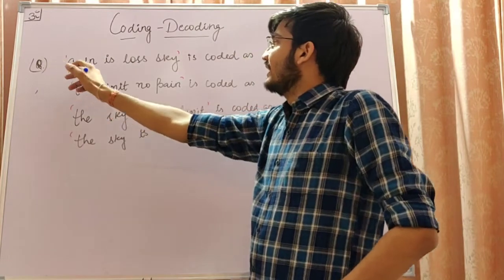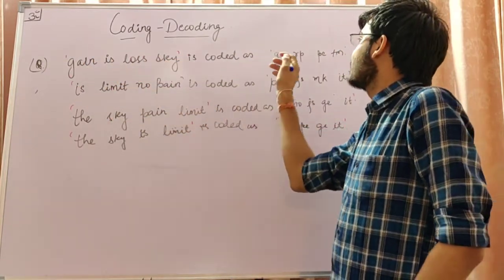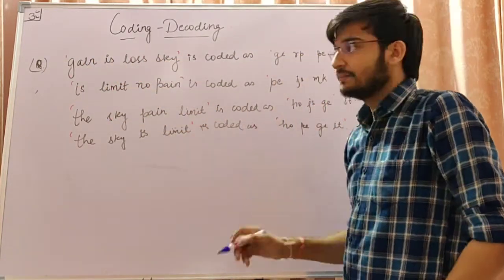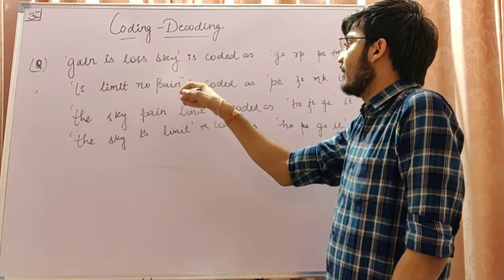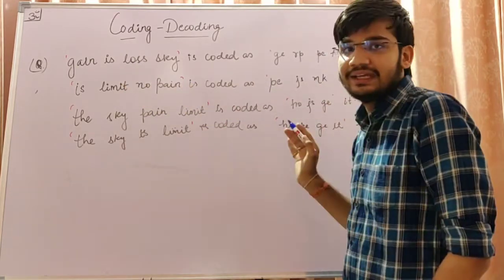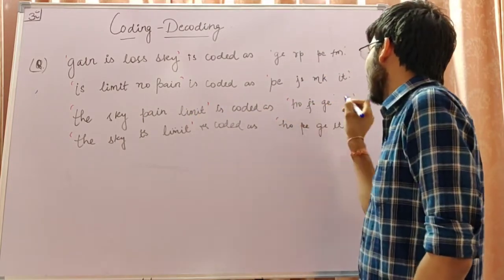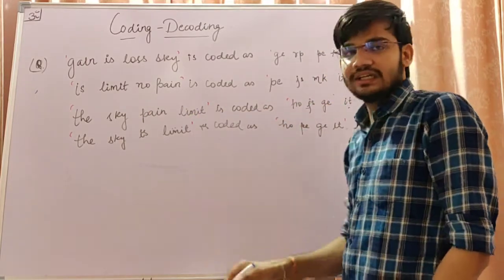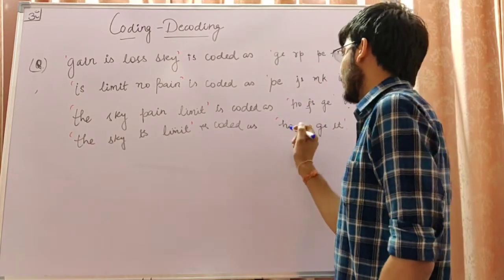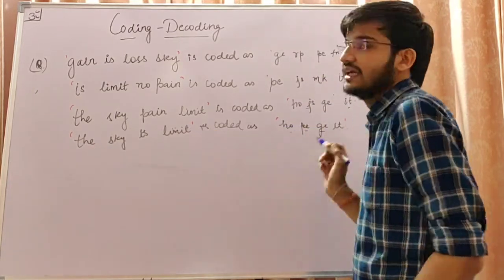The gain is lost sky is coded as GERP PETM. Is limit no pain is coded as PJSMKIT. The sky pain limit is coded as OJSGEIT. The sky is limit is coded as HOPEGIT.